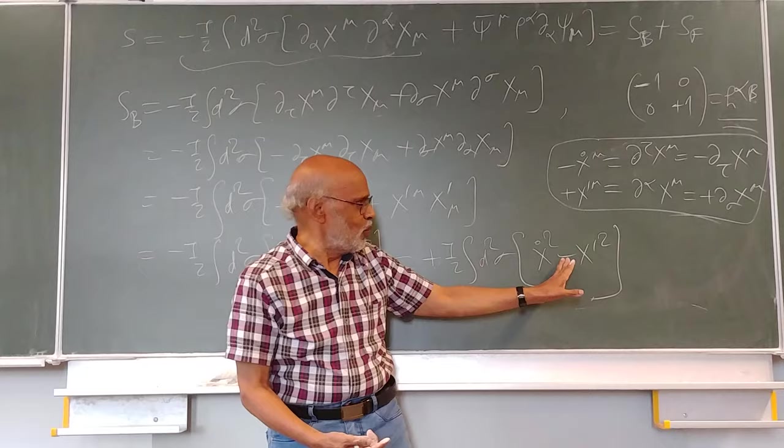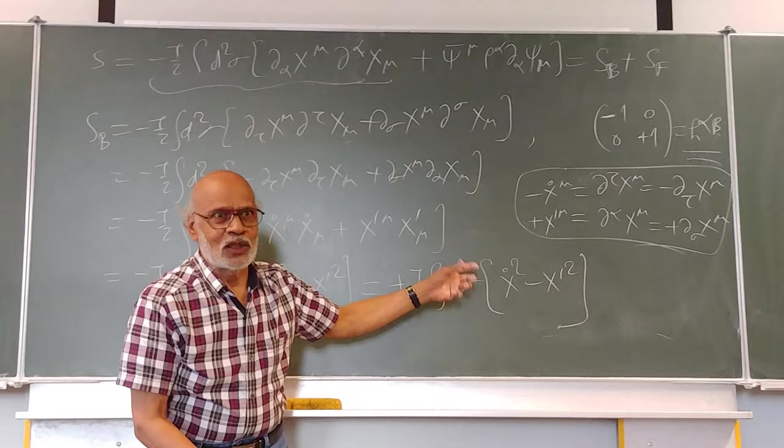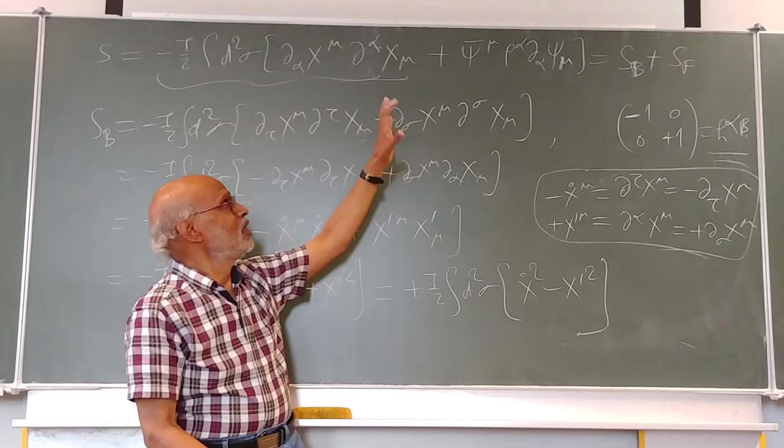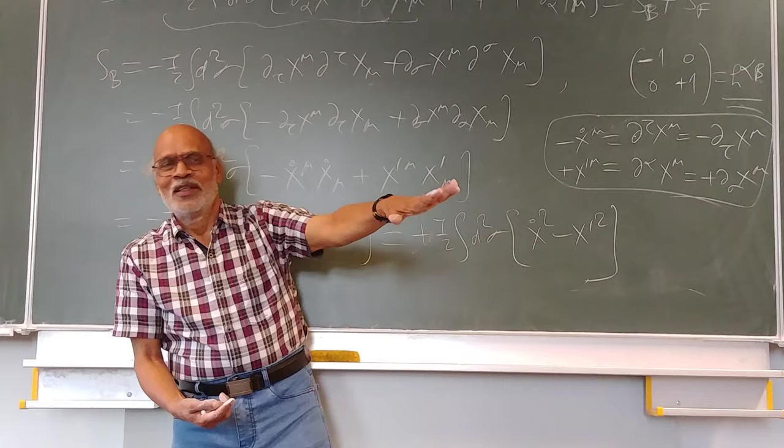x dot square is x_μ dot times x^μ dot. μ has been suppressed. It's a 26 vector in one time and 25 space when you are talking about purely bosonic theory.